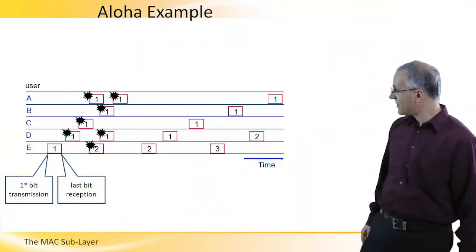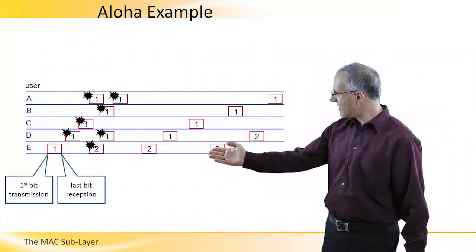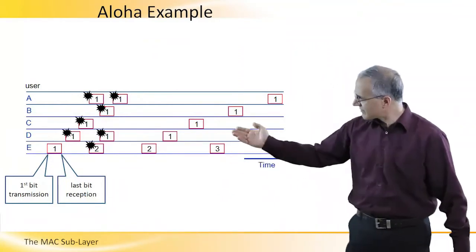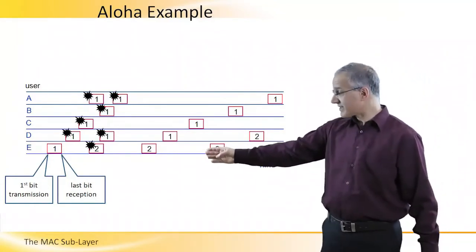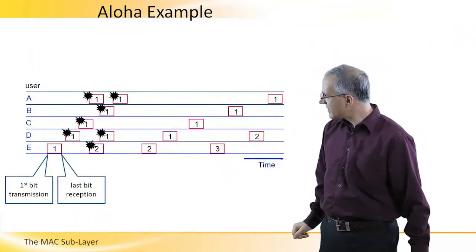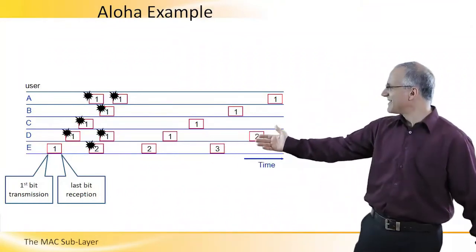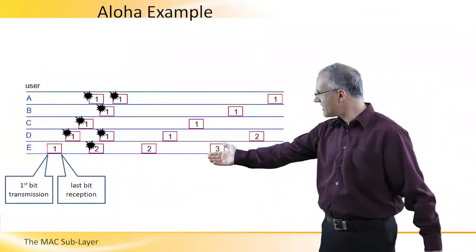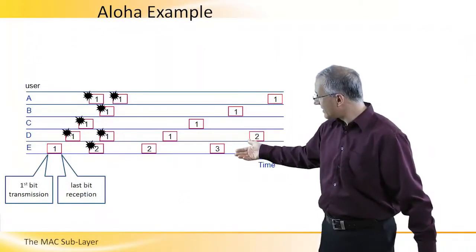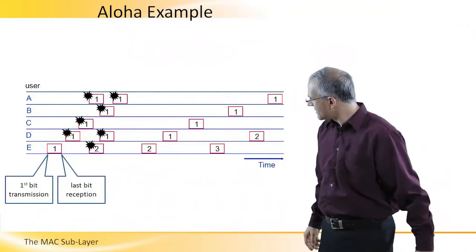In this diagram, we see an example of how Aloha is working. Time is flowing this way, and each rectangle represents a transmission of a frame, where the left end is the transmission of the first bit, and the right end is the reception of the last bit. What you can see here is five users using the same channel. User E is transmitting successfully its first frame, and then users D and C transmit with an overlapping period, so both their frames are collided. And then each of these users is picking a random time for retransmission.